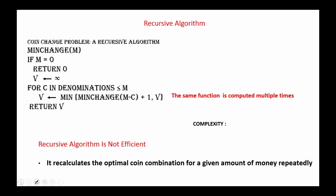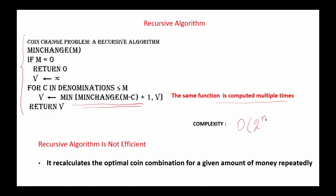A recursive strategy can also be applied to solve the Coin Change Problem — there is a pseudocode for a recursive algorithm to find the minimum change. However, the recursive strategy has the drawback of performing extra calculations, recalculating the optimal coin combination for a given amount repeatedly. The same function is computed multiple times, giving a complexity of O(2^N). The same inefficiency applies to the second type of the problem, so recursive strategy is not efficient here.